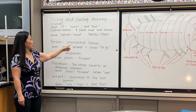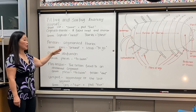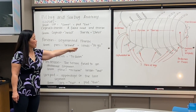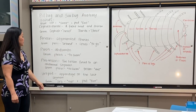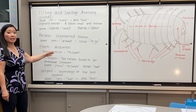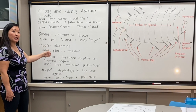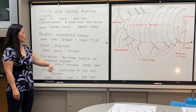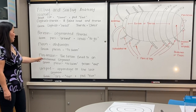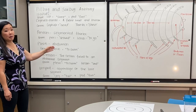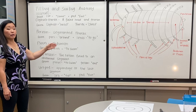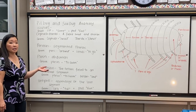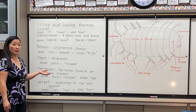Perion means segmented thorax — peri meaning around, and eni meaning to go. Pleion is the word for abdomen in our isopods; pleon means to swim. I think mostly because the first isopods were found in the sea, and a majority of isopods are found in the sea.